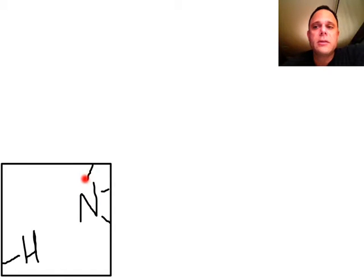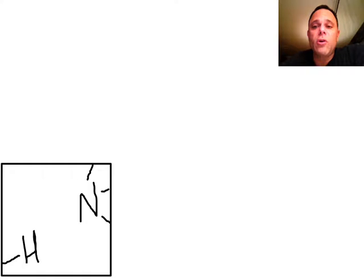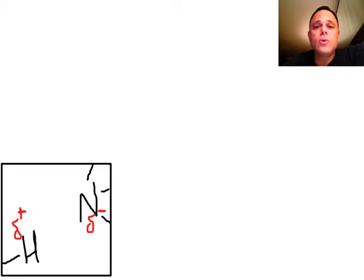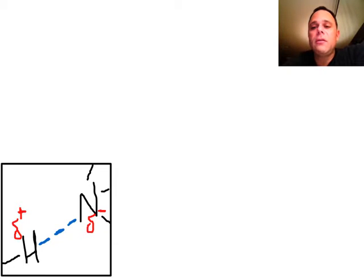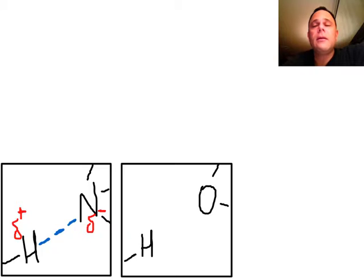Here's a nitrogen of another molecule with its bonds going outside the box. The hydrogen will take a slightly positive charge when it shares electrons unevenly with the other elements, and the nitrogen will take on a slightly negative charge. So when these two molecules get close together, there will be an intermolecular force of attraction between them, depicted by a dashed line as opposed to a solid line.